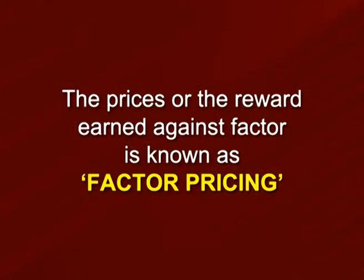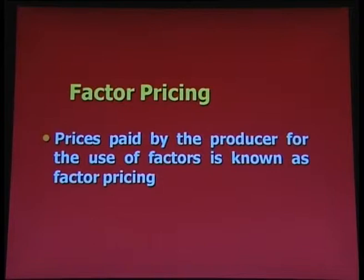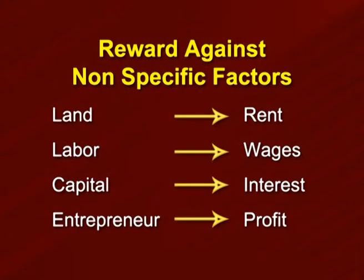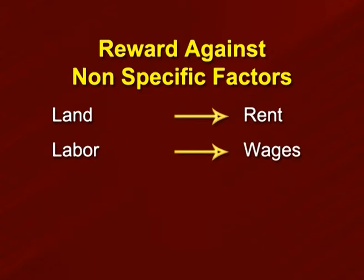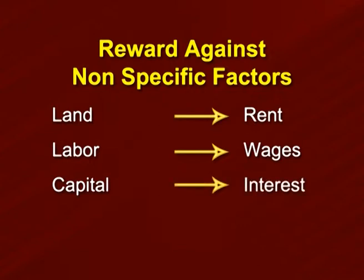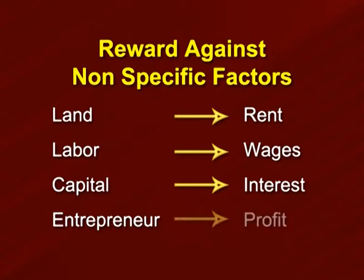The prices or the reward earned against a factor is known as factor pricing. That means prices paid by the producer for the use of factors is known as factor pricing. Against land, the owner gains rent. Against labour, a person earns wages. In the case of capital or money used by the producer, he pays interest for the use of capital. And when he uses his skill or ability to cover risk, it is known as entrepreneurship.